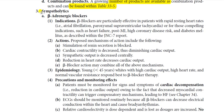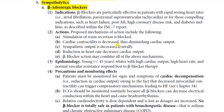The next class is sympatholytics. The first drug group is beta-adrenergic blockers, or simply beta blockers. Beta blockers are particularly effective in patients with rapid resting heart rate — such as atrial fibrillation or paroxysmal supraventricular tachycardia — or for those with compelling indications such as heart failure, post-myocardial infarction, high coronary disease risk, and diabetes mellitus, as described within the JNC-7 report.